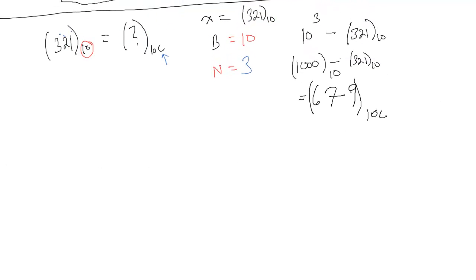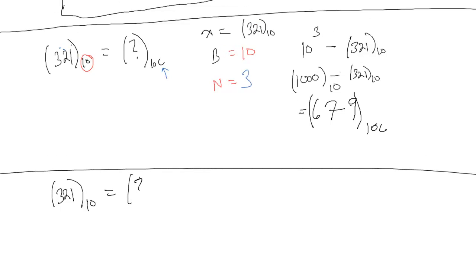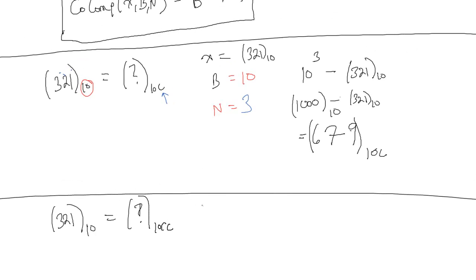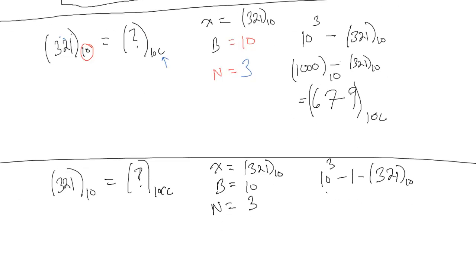Let's do another example. Let's find 321 base 10 in 10's co-complement form. We have the co-complement formula, so we need three inputs: x = 321 base 10, b = 10, n = 3. Plugging in, we get 10^3 minus 1 minus 321 base 10, which is 1000 minus 1 minus 321 base 10, equal to 999 base 10 minus 321 base 10.